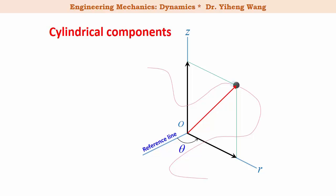Now, the curvilinear motion represented in the three-dimensional cylindrical coordinate system. As you can see, we keep the same z axis from the rectangular coordinate system, and we replace the 2D x, y coordinate system with a 2D polar coordinate system. Therefore, the position of this particle can be represented by coordinates of r, theta, and z. There are three unit vectors associated with the cylindrical coordinate system: u_r, the direction of the radial component; u_theta, the direction of the transverse component which is always perpendicular to u_r; and u_z, which is the same k unit vector from the rectangular coordinate system, always perpendicular to the plane made by u_r and u_theta.